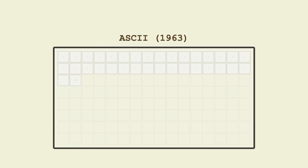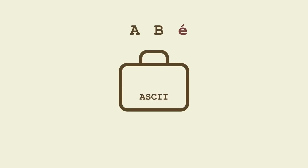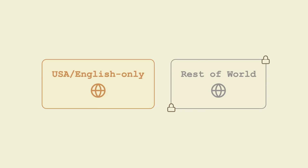In the 1960s, Americans created ASCII, a simple system with just 128 slots. Think of it like trying to pack for a year-long world trip with just a carry-on. A became 65, B became 66. Simple. But want café? Too bad — no accented E. Want to write in Chinese, Arabic, or even use emojis? Impossible. ASCII was English only, and the rest of the world was locked out.